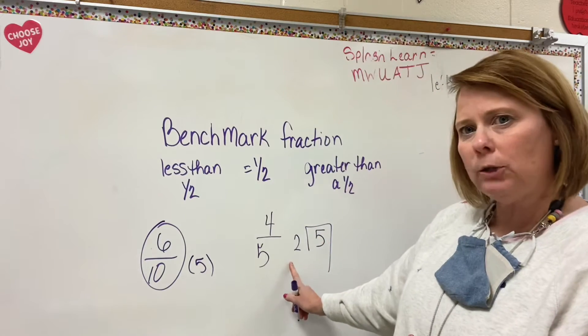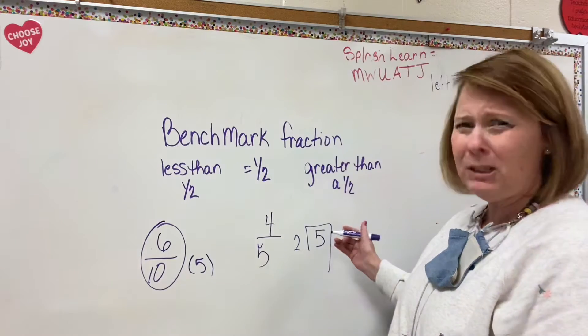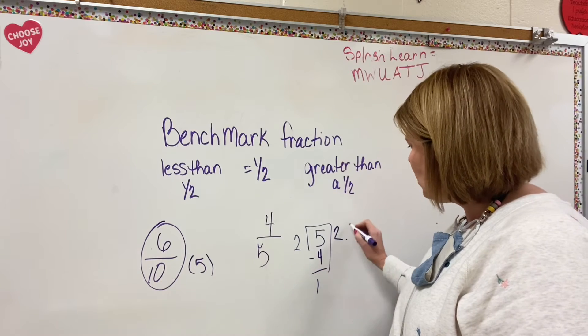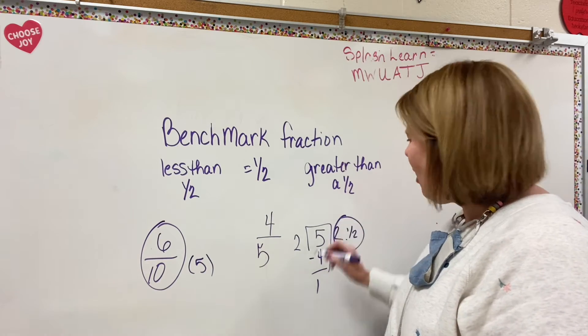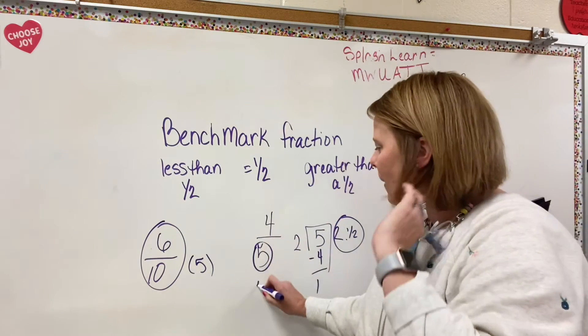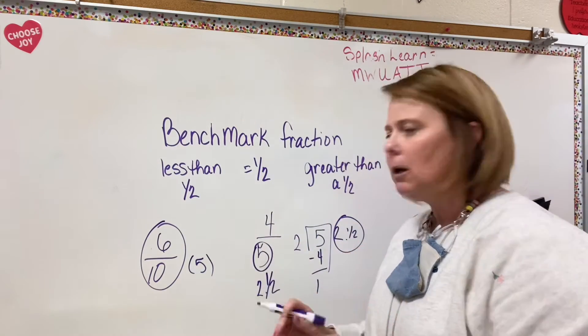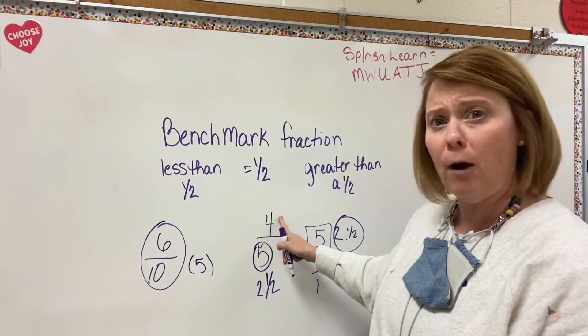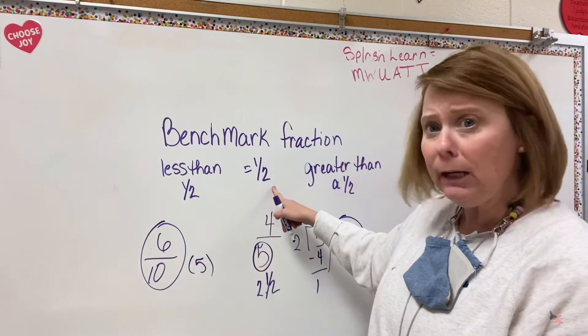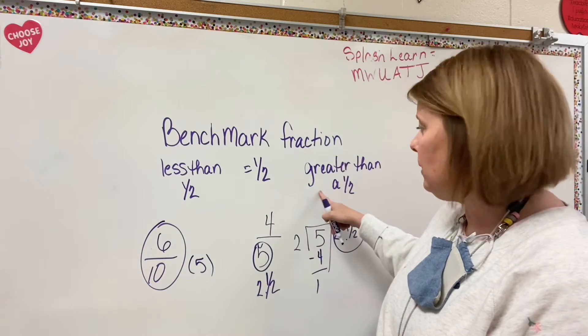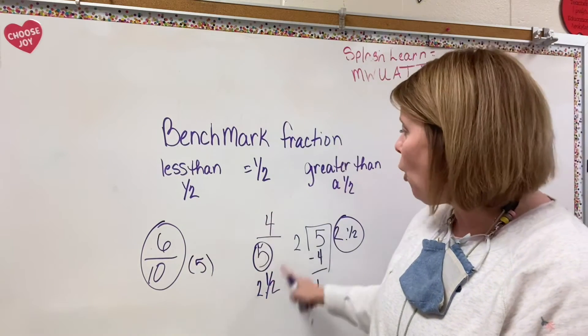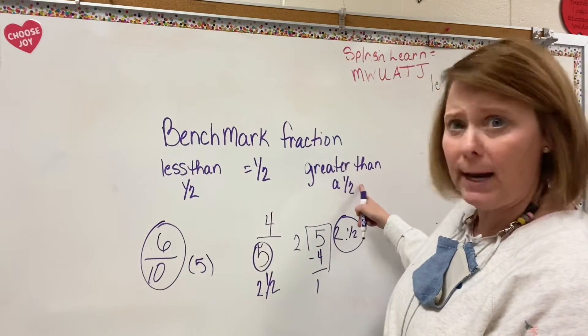How many times would you want 2 to go into 5? Well, I'm going to say 2, because 2 times 2 is 4, which leaves me 1 left over. So it's about, it's not a clear half, but a half of 5 would be about 2 and a half. So now, is your numerator of 4 less than a half, equal to a half, or greater than a half? Well, 4 is clearly over 2 and a half. So 4 fifths is actually greater than a half.